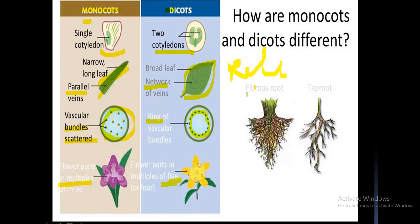Monocots have a fibrous root system, while dicots have a taproot system. A simple example of monocots is the grass family — Gramineae. If you pull out grass you will observe the fibrous root system, whereas dicot plants have the taproot system.